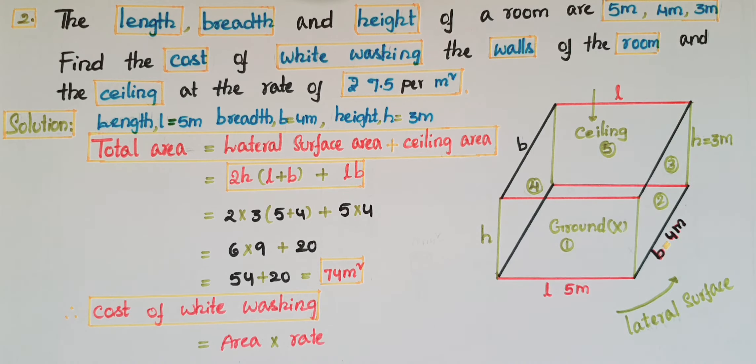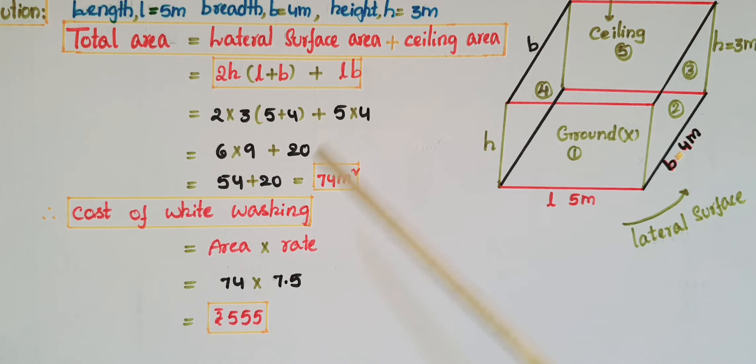To find the cost of whitewashing, we multiply area times rate. The rate is 7.5 rupees per meter square, and the area is 74. So 74×7.5 equals 555 rupees.